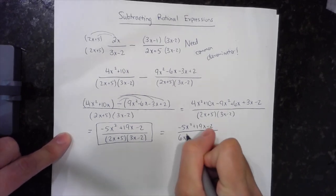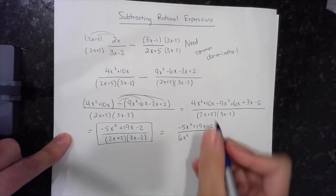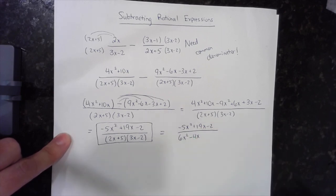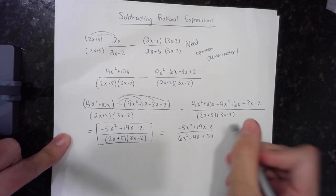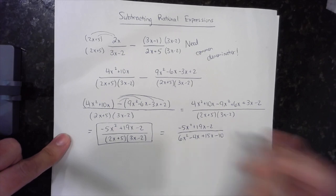2x times 3x, 6x squared, 2x times negative 2, negative 4x, 5 times 3x, plus 15x, and then a 5 times a negative 2, which is a negative 10.